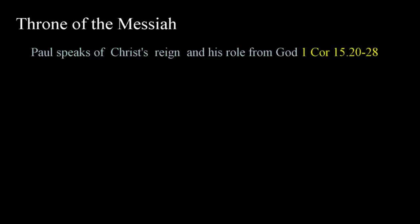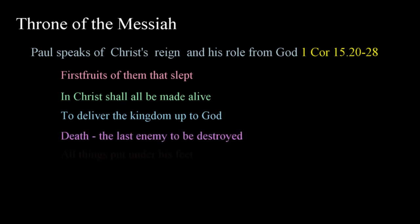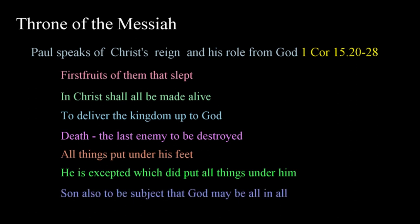Paul speaks of the reign of Christ and his role established by God. But now is Christ risen from the dead and become the firstfruits of them that slept. For since by man came death, by man came also the resurrection of the dead. For as in Adam all die, even so in Christ shall all be made alive. But every man in his own order, Christ the firstfruits, afterward they that are Christ's at his coming. Then cometh the end when he shall have delivered up the kingdom to God, even the Father, when he shall have put down all rule and all authority and power. For he must reign till he hath put all enemies under his feet. The last enemy that shall be destroyed is death. And when all things shall be subdued unto him, then shall the Son also himself be subject unto him that put all things under him, that God may be all in all, in 1 Corinthians 15:20-28.